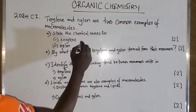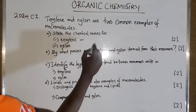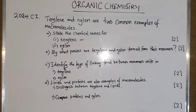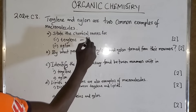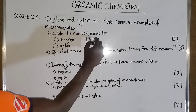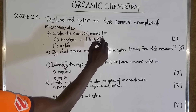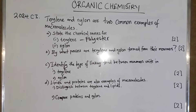The chemical name for terylene is polyester. At your level you just write polyester. It is a polyester because it has an ester linkage — an ester linkage.